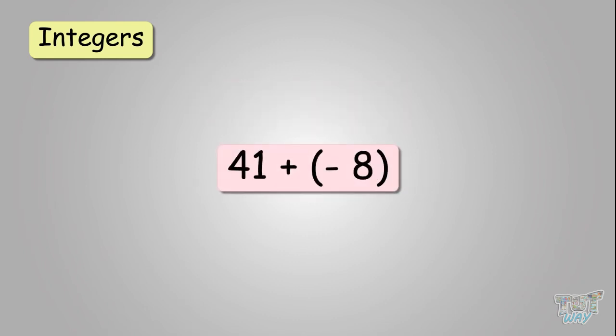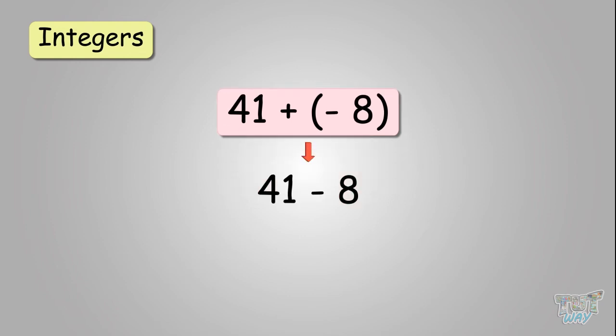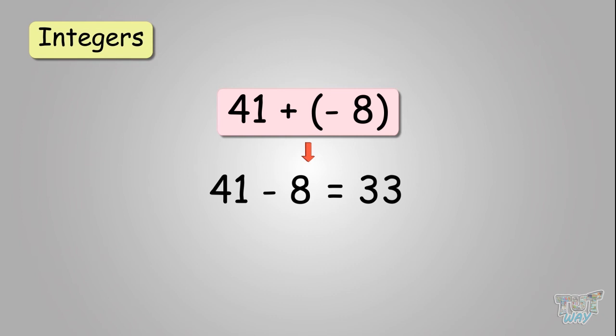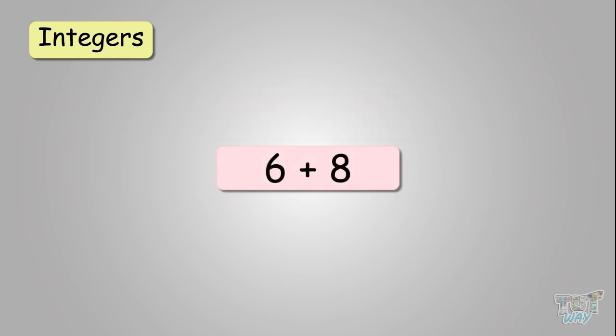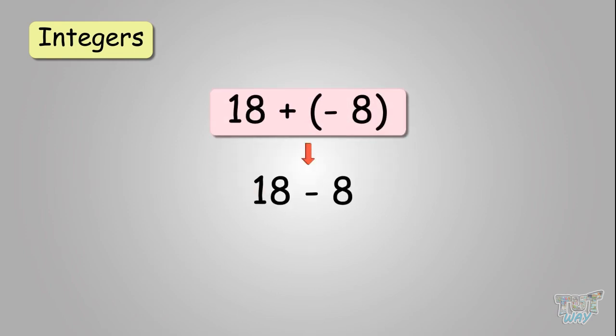Forty-one plus negative eight — you get forty-one minus eight, which equals positive thirty-three. Six plus eight — both numbers are positive, so you do addition to get fourteen. Eighteen plus negative eight — you'll be doing subtraction. The sign of the bigger number: the bigger number is eighteen, so the answer is ten.